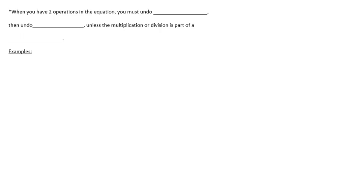This video is a quick review of two-step equations. Generally, two-step equations involve a combination of addition, subtraction, multiplication, and division. For instance, you might have the equation negative 20 equals 3x minus 2. We want to undo those operations in the opposite order they were applied — so instead of multiplying then subtracting, we do addition and subtraction first.